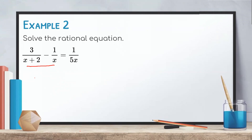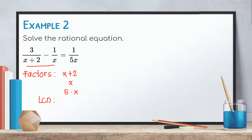To find the least common denominator, look at the factors of our denominators. The factors are (x + 2), x, and 5 and x. Notice that we have 2x here as our factor, so for the LCD we will only be taking one x. For that case, our LCD is (x + 2) times 5 times x.